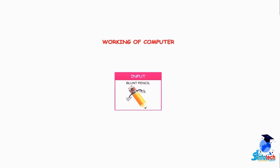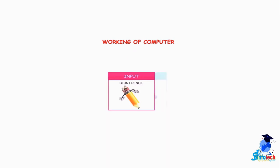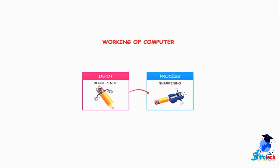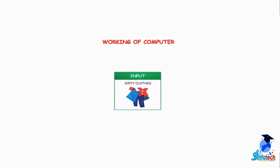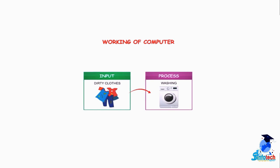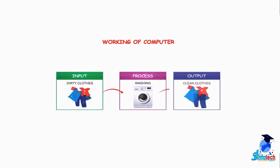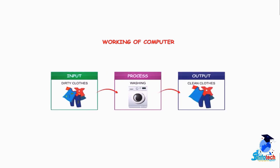For example: Input — blunt pencil, Process — sharpening, Output — sharp pencil. Another example: Input — dirty clothes, Process — washing, Output — clean clothes.